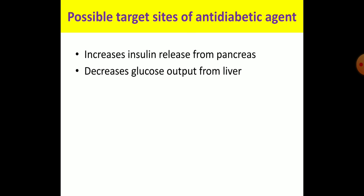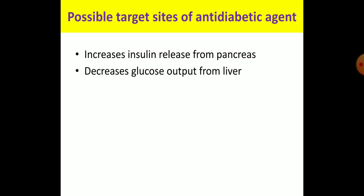One of the major sources of glucose in the plasma is hepatic glucose output. There are two main sources: hepatic glucose output and glucose from the diet. If we reduce the hepatic output of glucose, a drug can act as an anti-diabetic agent. Another mechanism is increasing glucose utilization by peripheral tissues — mainly adipose tissue, skeletal muscle, and liver.